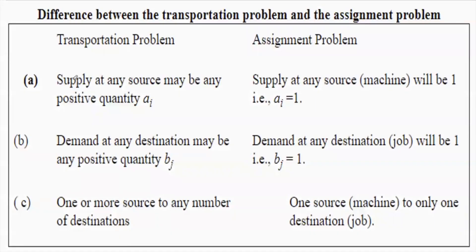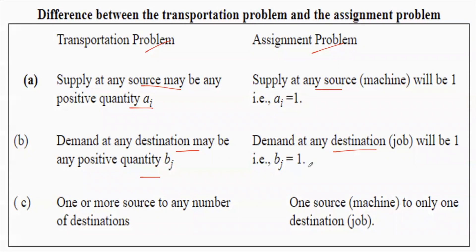Let's study the basic difference between transportation and assignment problems. Assignment problem is basically a type of transportation problem, but here supply at each source is only one, whereas in transportation it may be any positive quantity. Similarly, demand at any destination is also one here. In transportation, one or more sources can supply to any number of destinations, but here only one source goes to only one destination.